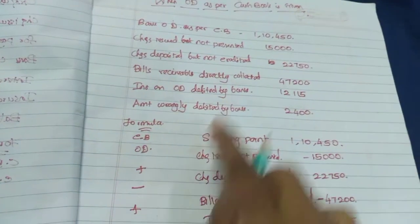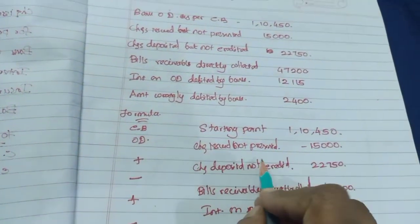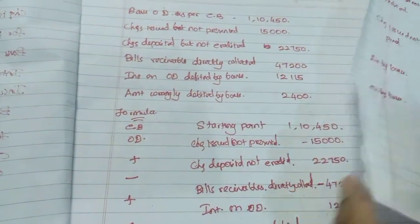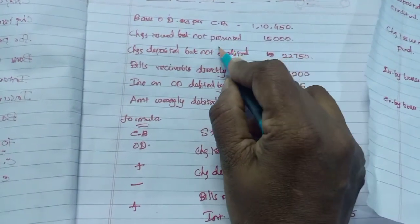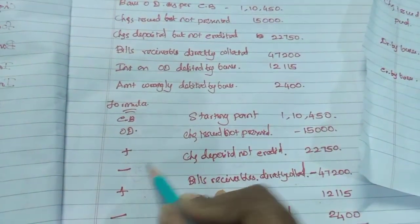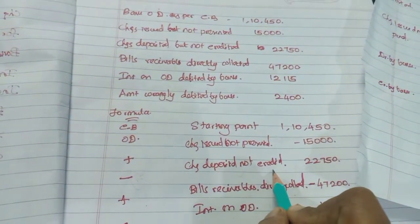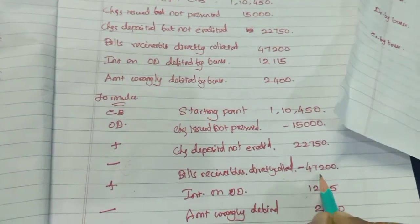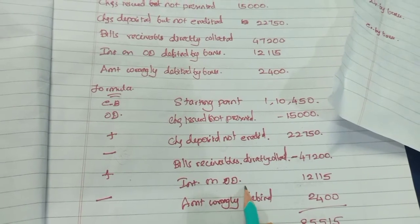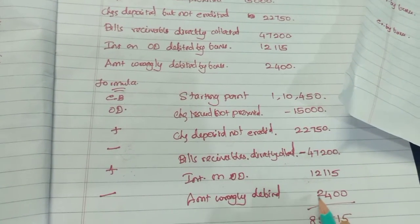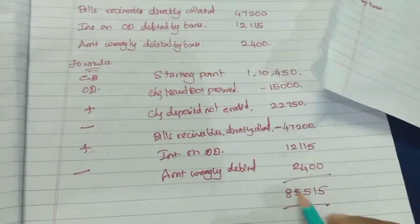Using the formula — plus, minus, plus, minus — for cashbook OD: check issued not presented, which is check issued not paid, is minus, so minus Rs. 15,000. Check deposited not credited is plus, so plus Rs. 22,750. Bills receivable directly collected — credit by bank — minus Rs. 47,200. Interest on OD debited by bank — debit by bank — plus Rs. 12,115. Amount wrongly debited by bank — debit by bank — plus Rs. 2,400. Altogether, the balance as per passbook is Rs. 85,515.